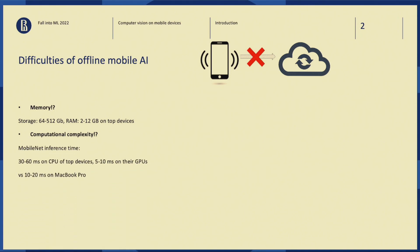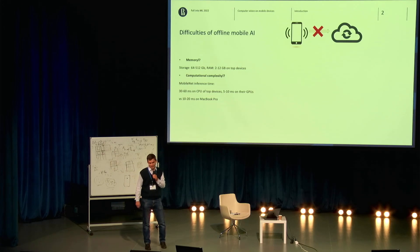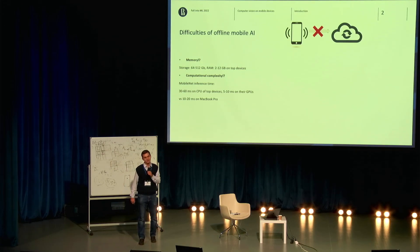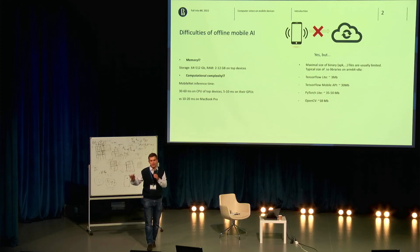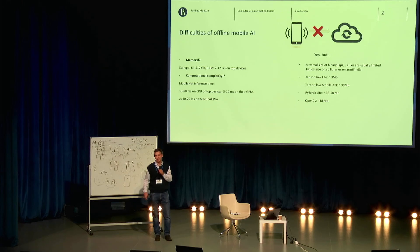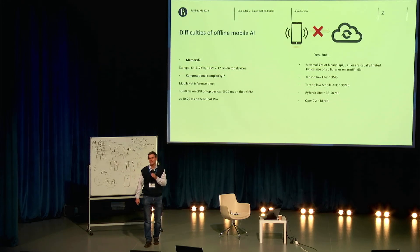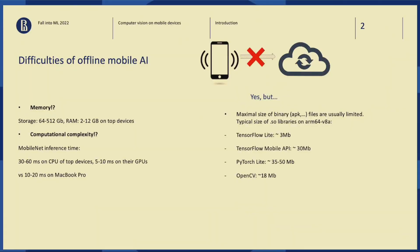If your device has a GPU, then probably you are even faster than a laptop without GPU. But what's important: any mobile application is limited by some size. Even if you have enough memory to store your model, you are limited by the size of your binary file. And also, you are limited by the size of special libraries you use. For example, the PyTorch Lite library was about 30 megabytes in its first version, and right now it's something like 50 megabytes — plus 20 megabytes, which is huge from a mobile point of view.